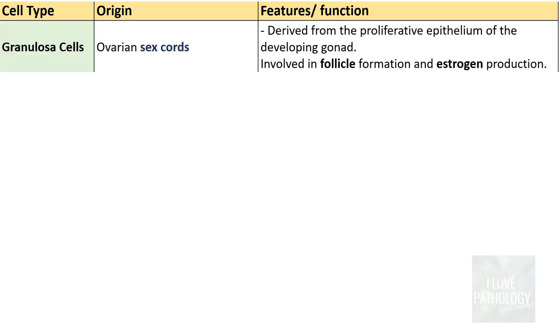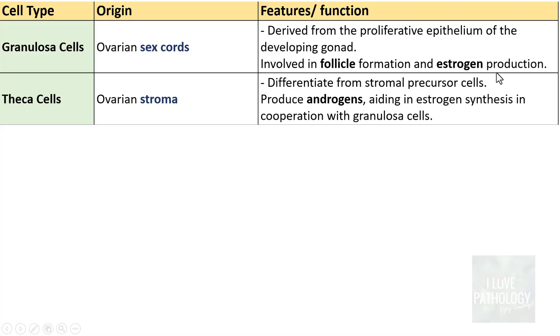Let us look at the cells which form the sex cord and stroma. First, granulosa cells are derived from the proliferative epithelium of the developing gonad and are involved in follicle formation and estrogen production - that is the main function of granulosa cells. In contrast, theca cells are derived from ovarian stromal cells. Their main function is to produce androgen, but in cooperation with the adjacent granulosa cells, they go on to form estrogen. So the primary function of both granulosa and theca cells is estrogen production.